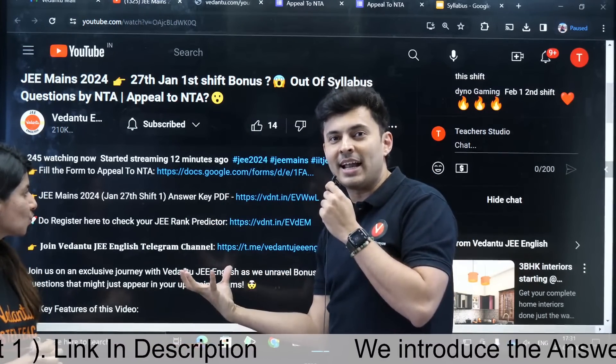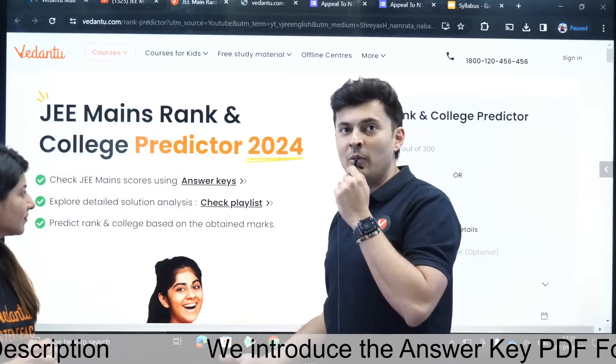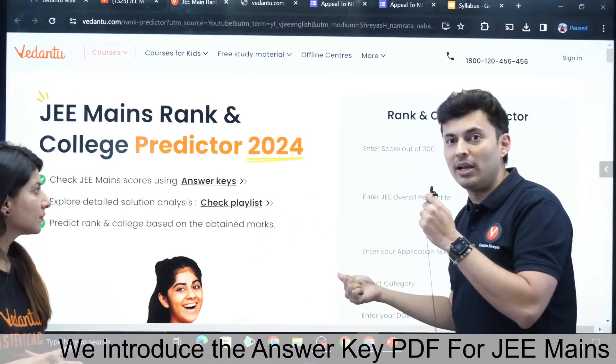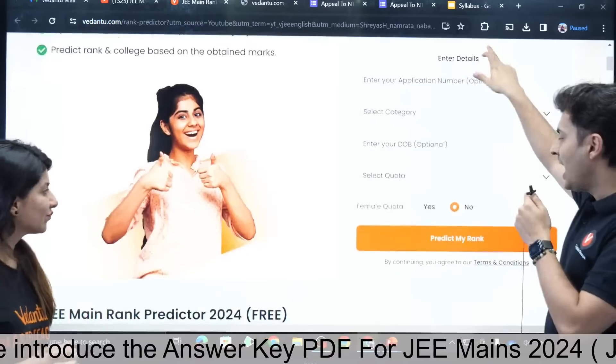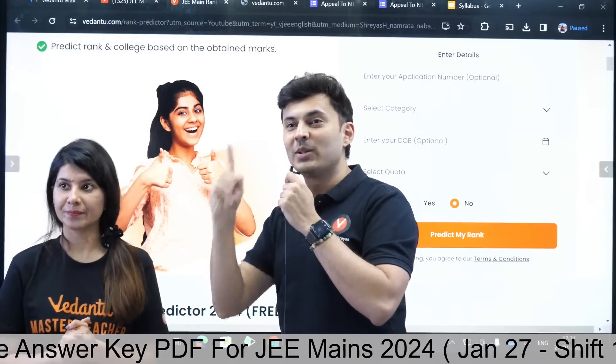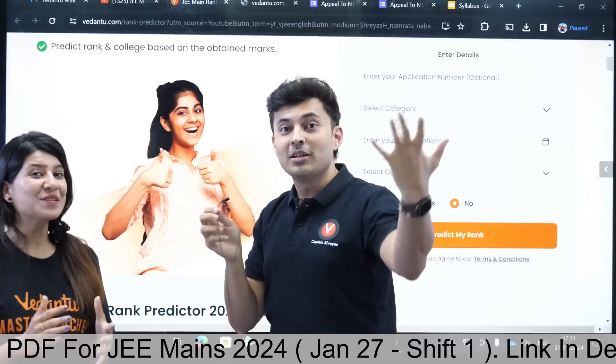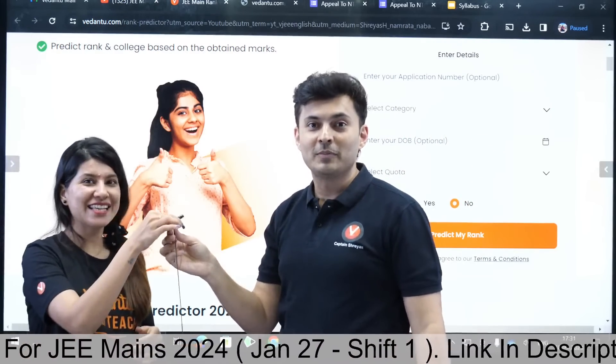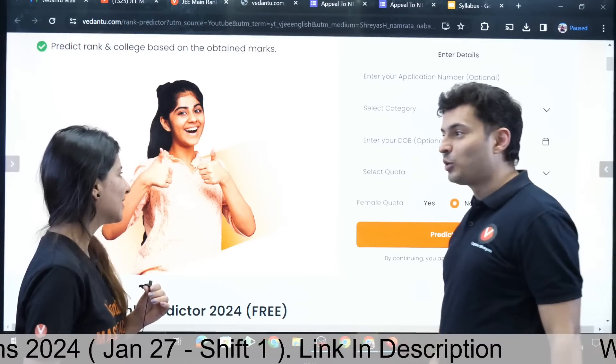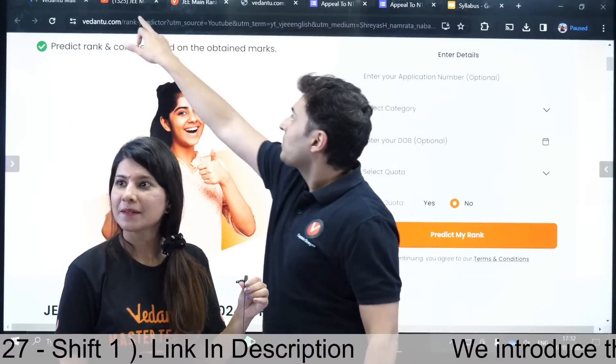And apart from that, let me tell you that the entire JEE Mains first shift 27 Jan answer key PDF has been created already. Just enter your login details - if you have not created your account, create your free account right now. Enter your details, you will get the entire PDF of the first shift. This has been corrected, there are some new questions also which were added which we did not discuss because those questions came in towards the end. The entire questions with answer key is there in this particular PDF. And if you want to predict your rank and college, there is a link below.